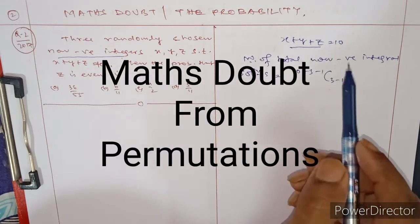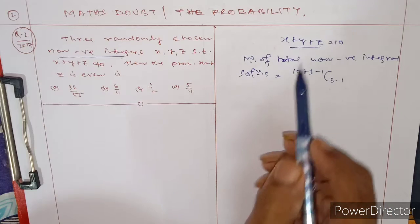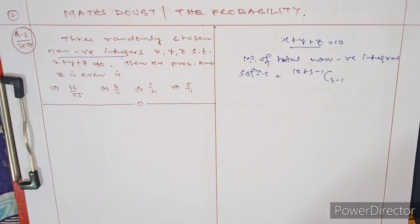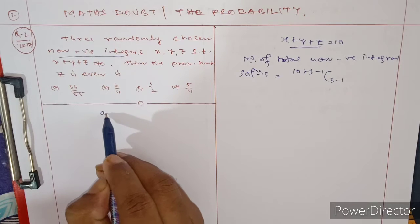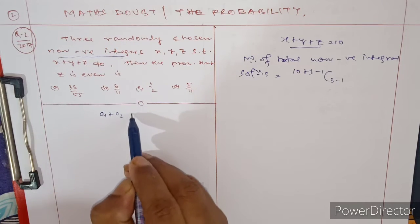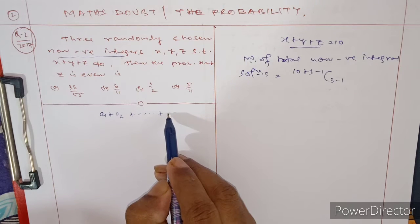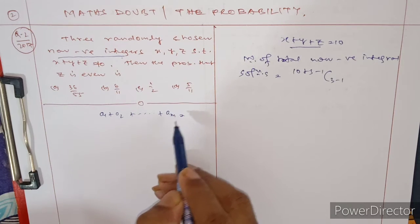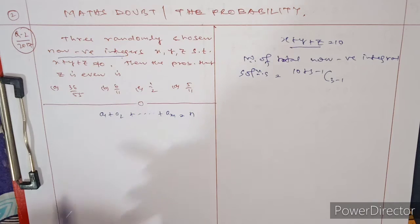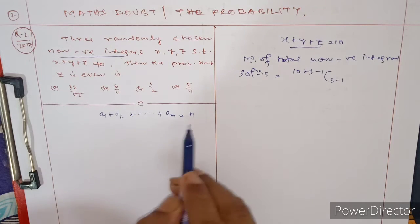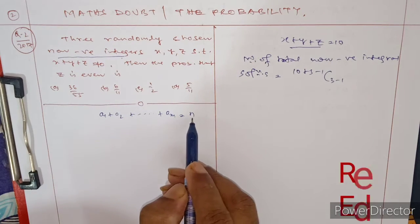In multinomial theorem, suppose you have a1 + a2 + ... + am equal to n. The number of total non-negative integral solutions is n + m - 1, C m - 1.